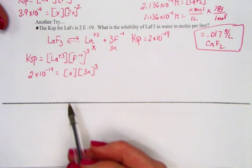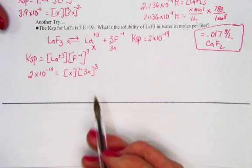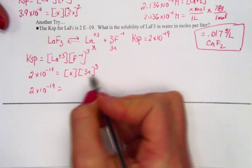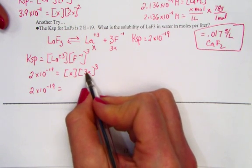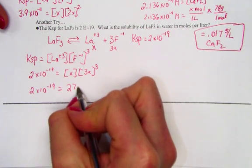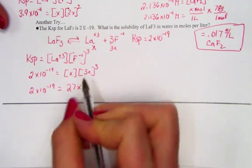So we have x times 3x cubed. Simplifying, 2 times 10 to the negative 19th. Let's see, 3 cubed is 27. x cubed times x, this gives us 27x raised to the fourth power.